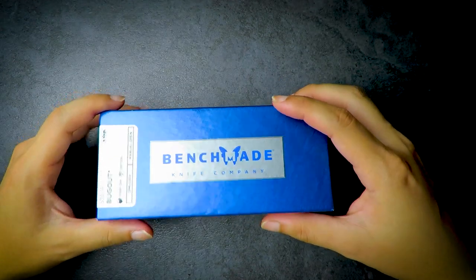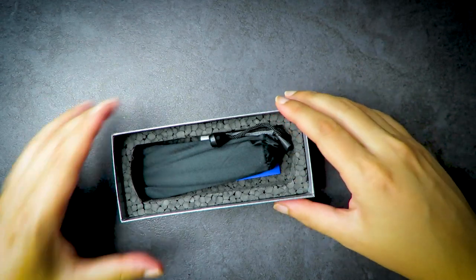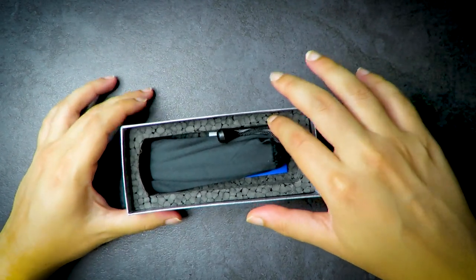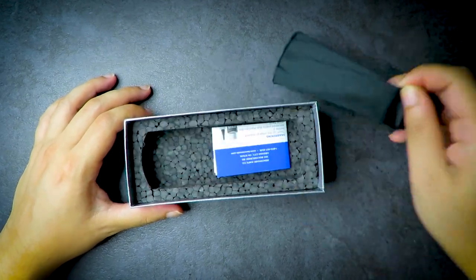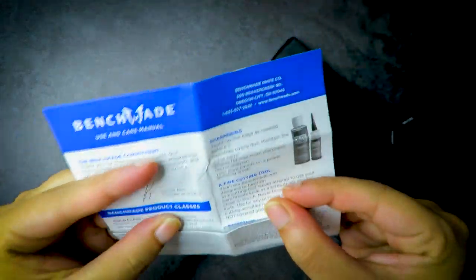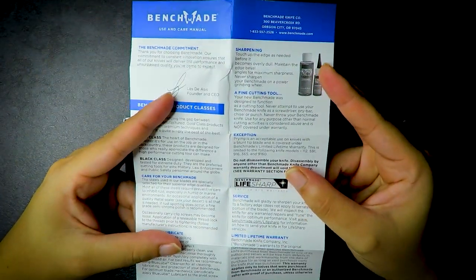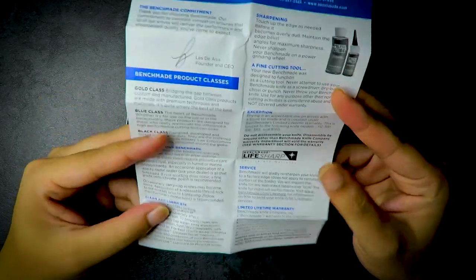Standard Benchmade knife company box. You have your information right here. Inside we have some nice foam. In here we have information about the knife and a user care manual. It talks about sharpening, fine-tuning, blue class, gold class, black class, and Benchmade's LifeSharp policy.